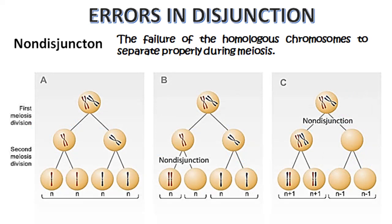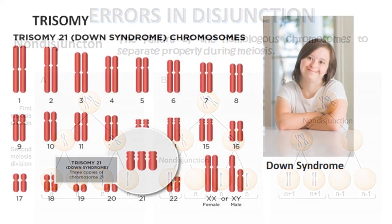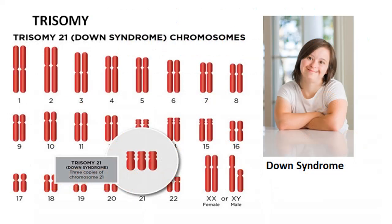In one case of non-disjunction, two kinds of gametes are formed: one has an extra chromosome and the other is missing a chromosome. The effects of non-disjunction are often seen when gametes fuse in fertilization. For example, when a gamete with an extra chromosome is fertilized by a normal gamete, the zygote will have an extra chromosome.